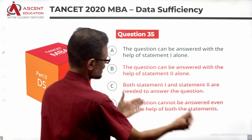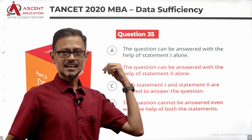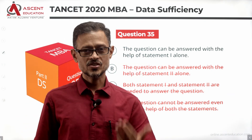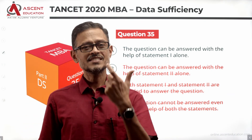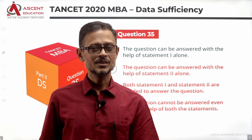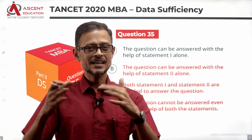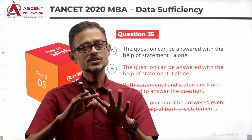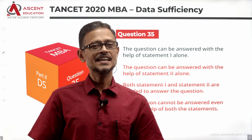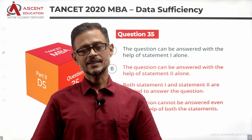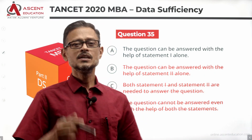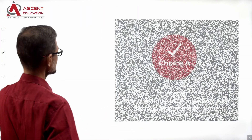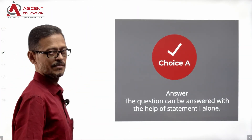We can eliminate all other answer options. As we already established the moment Statement 1 was sufficient, the answer option is A. We did the additional step just to confirm. Statement 1 alone is sufficient, so A is the answer to this question.